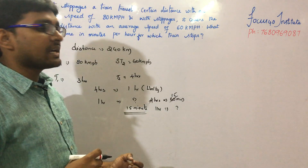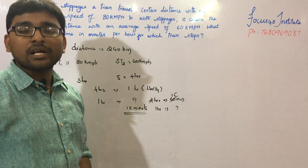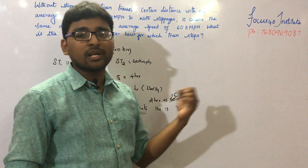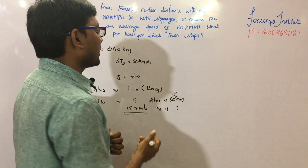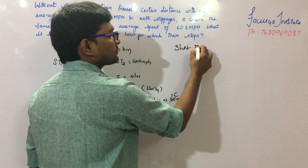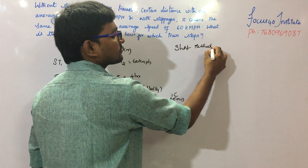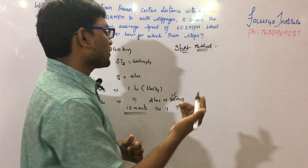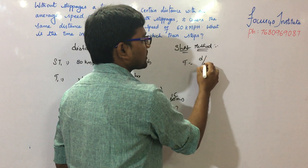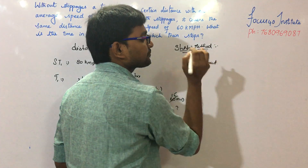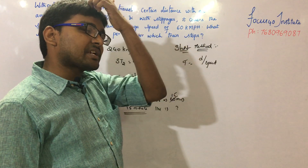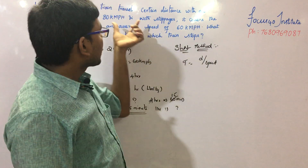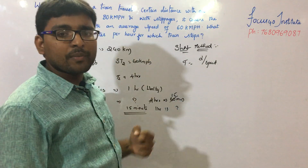The second method is the short method. We approach this based on the basic concept: time equals distance divided by speed. In the short method, we work on a per-hour basis. The speed with stoppages is 60 kilometers per hour.